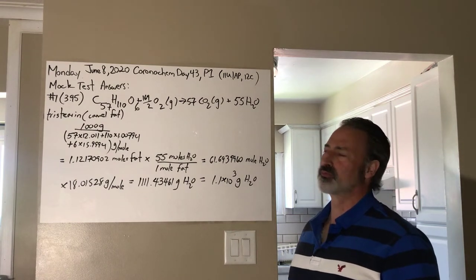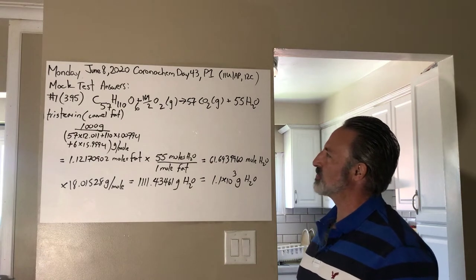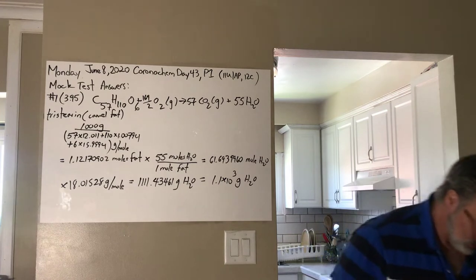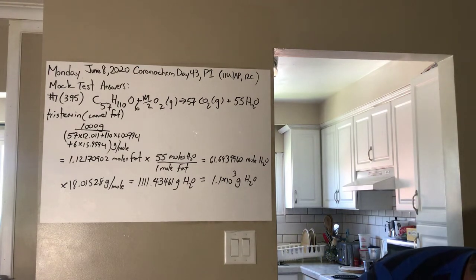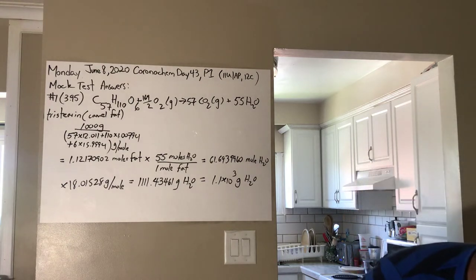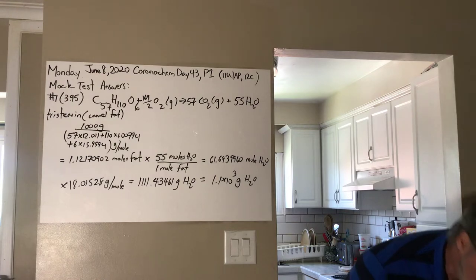So this is the first answer to the mock test. This is question number 395. It says, the fat stored in the hump of a camel is a source of both energy and water. Calculate the mass of water produced by metabolism of one kilogram of fat, assuming the fat consists entirely of tristearin, C57H110O6, a typical animal fat.